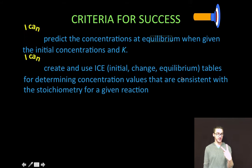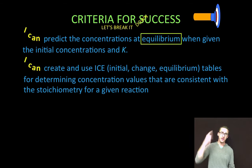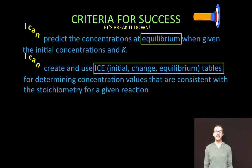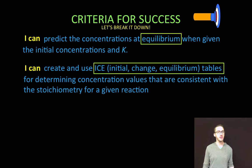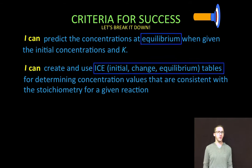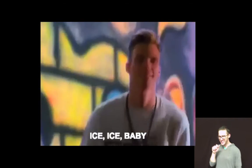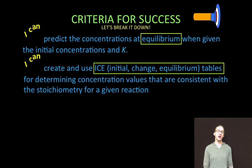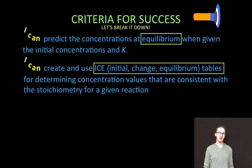Two things. One, we are going to predict the concentrations at equilibrium when given the initial concentrations and our equilibrium constant K. Two, we are going to create and use ICE tables for determining concentration values that are consistent with the stoichiometry for a given reaction.